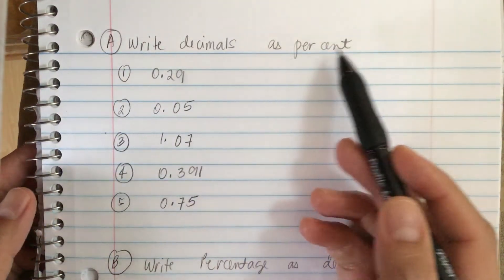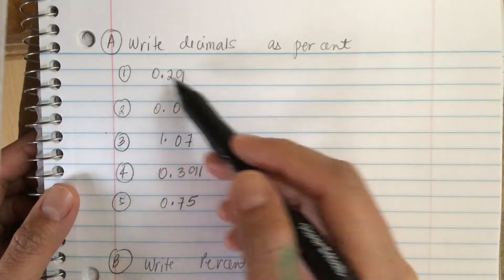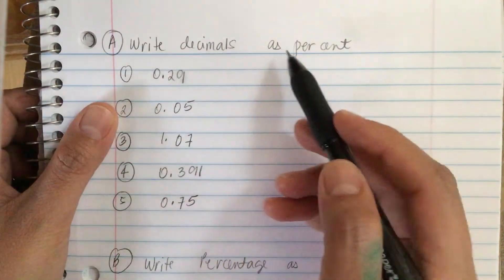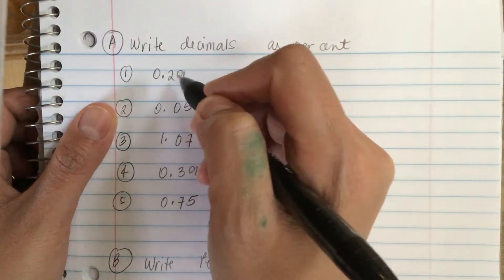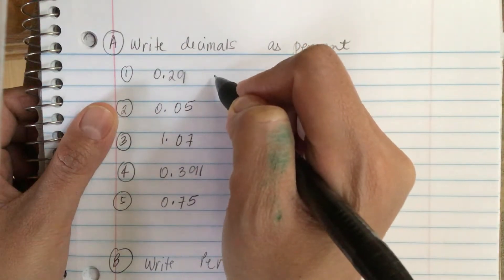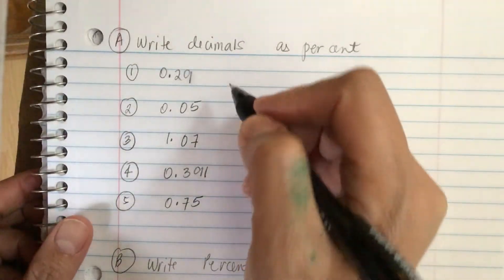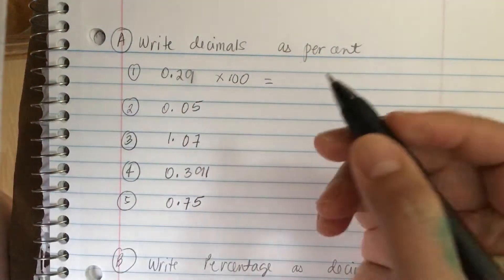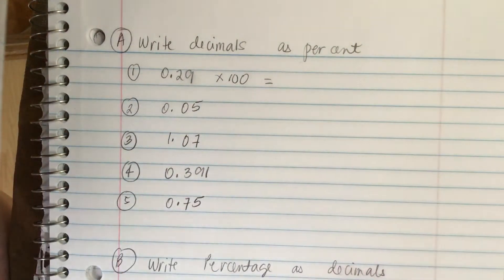Write decimals as percent. So we have 0.29. To change decimals to percent, we multiply this number by 100 and then we add the percent sign. So we multiply this by 100 and we get 29 percent.